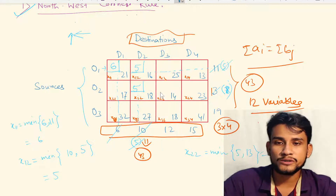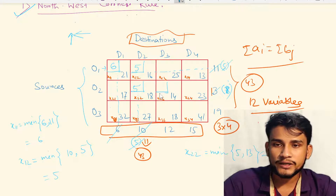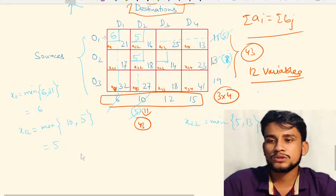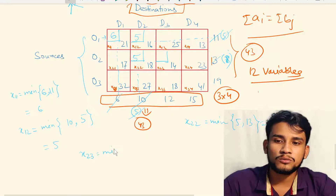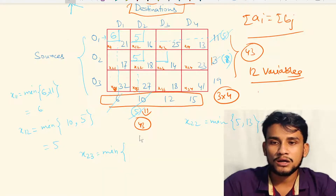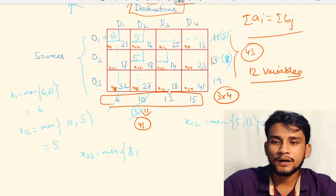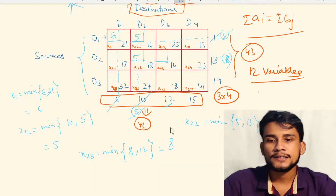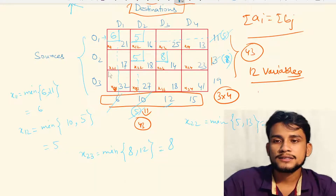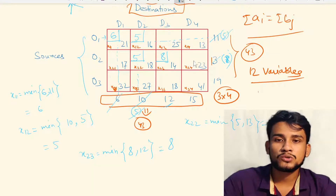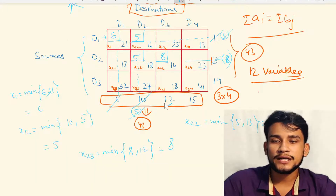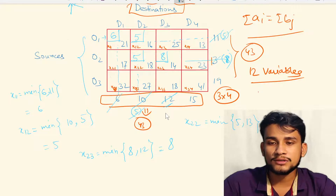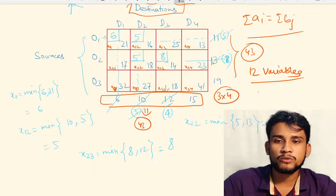The next cell is x23. x23 = minimum(remaining supply of O2, demand of D3) = minimum(8, 12) = 8. We write 8 here. The total supply from O2 is now closed. The remaining demand for destination D3 is 12 − 8 = 4 units.